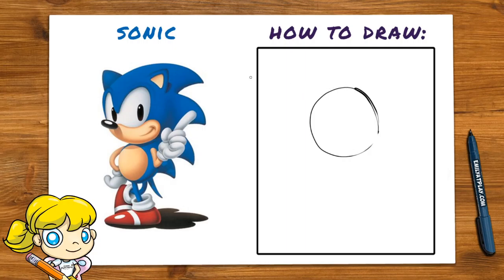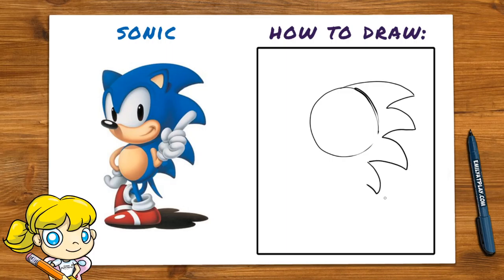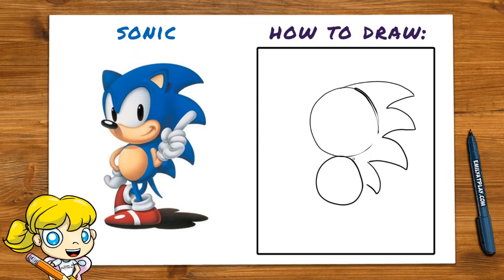Let's start with his head — we'll draw a circle. Then let's draw his hair: he's got one, two, three, four triangles at the top. Now let's put another circle under his head for his body. If you make a mistake, no worries — we're just sketching and you can erase it after.